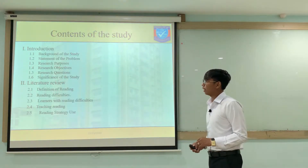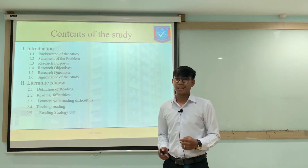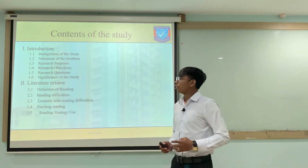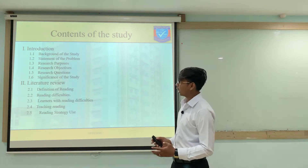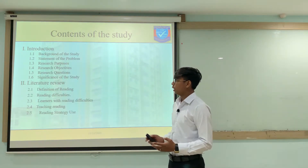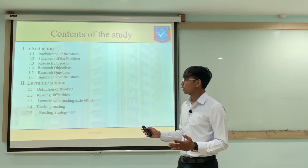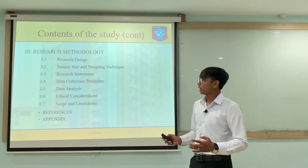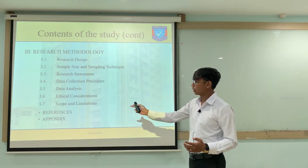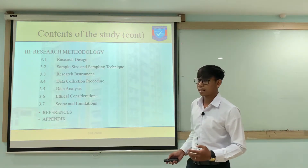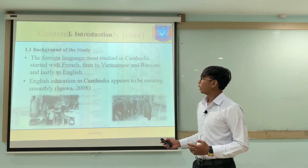Now let's move to the content of the study. I have three main sections. The first is the introduction, which includes the background and significance of the study. The second is the literature review, which has five points. And the last is the research methodology, covering research design through to scope and limitations. And last but not least, references and appendix.